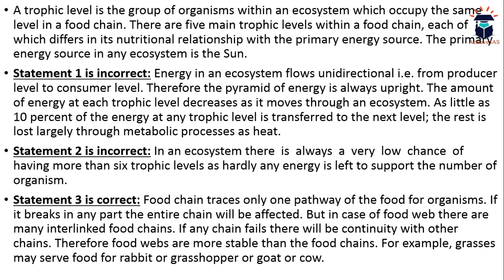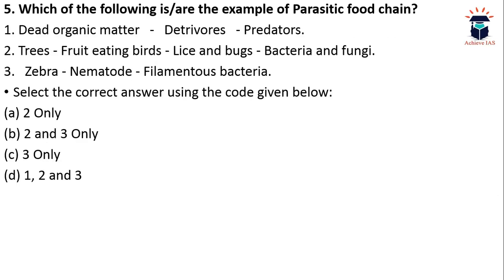The next question: which of the following is/are examples of a parasitic food chain? First: dead organic matter → detritivores → predators. Second: trees → fruit-eating birds → lice and bugs → bacteria and fungi. Third: zebra → nematode → filamentous bacteria. The second and third are correct; the first is not correct because it describes a detritus food chain, where energy transfer starts with dead organic matter being eaten by detritivores, which are then eaten by predators.